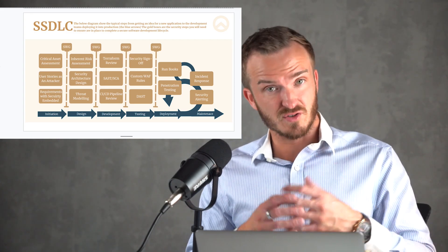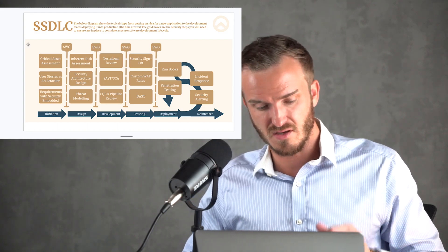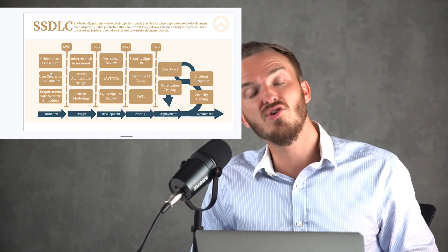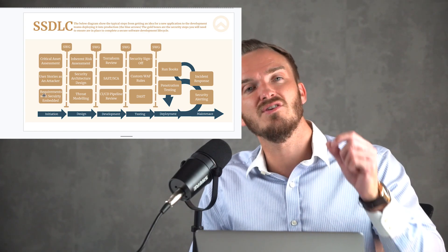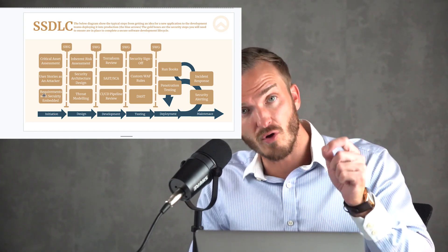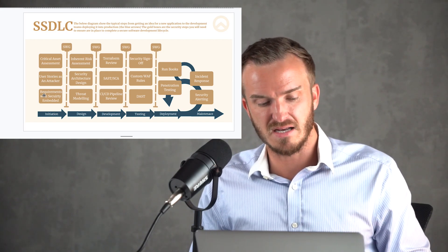In the initial phase, we do a critical asset assessment or a critical asset list like we've done during this course. Then we create user stories, potentially as anti-attacker stories. Then we write security requirements, functional or non-functional, more particularly security requirements, with security embedded throughout that.